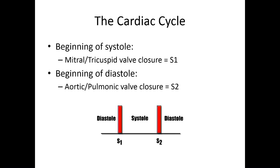The beginning of systole is marked by closure of the mitral and tricuspid valves. You get isovolumetric contraction of the ventricles, and the pressure then exceeds the pressure in the atria, triggering closure of the tricuspid and mitral valves — and that creates S1. At the end of systole, or beginning of diastole, once the pressure in the aorta and pulmonary artery exceeds the pressures in the LV and RV, the pulmonic and aortic valves close — and that creates S2. So in between S1 and S2 is systole, and in between S2 and S1 is diastole.